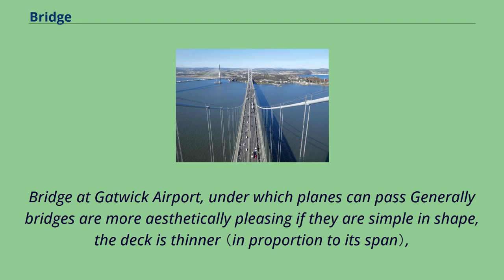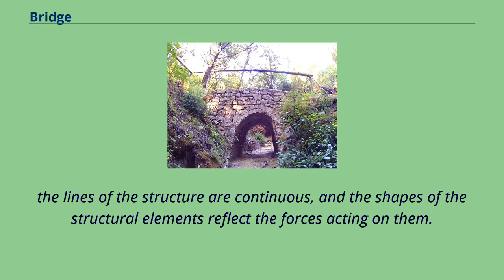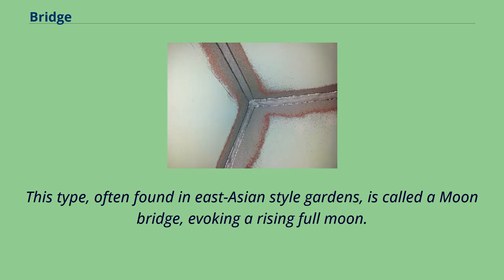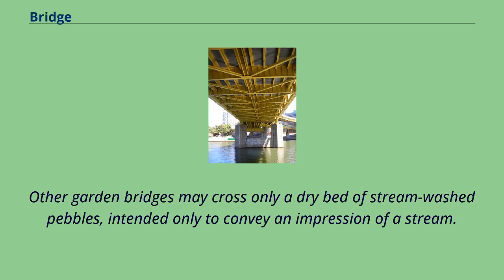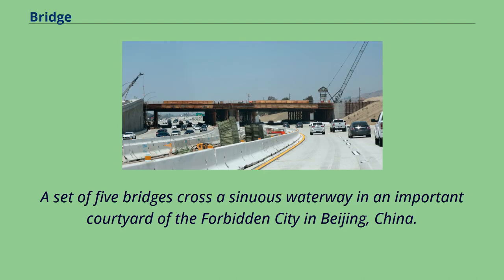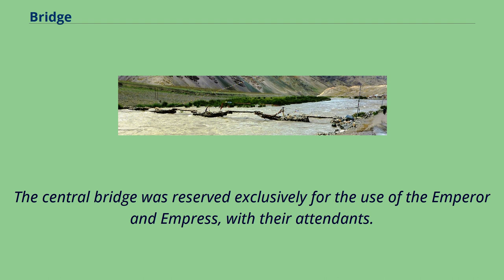Generally, bridges are more aesthetically pleasing if they are simple in shape, the deck is thinner, the lines of the structure are continuous, and the shapes of the structural elements reflect the forces acting on them. To create a beautiful image, some bridges are built much taller than necessary. This type, often found in East Asian-style gardens, is called a moon bridge, evoking a rising full moon. Other garden bridges may cross only a dry bed of stream-washed pebbles, intended only to convey an impression of a stream. Often in palaces, a bridge will be built over an artificial waterway as symbolic of a passage to an important place or state of mind. A set of five bridges cross a sinuous waterway in an important courtyard of the Forbidden City in Beijing, China, where the central bridge was reserved exclusively for the use of the Emperor and Empress.